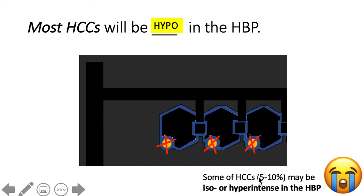Again, we have an exception here. About 10% of HCCs may express these transporters and may be iso to hyper-intense in the hepatobiliary phase.